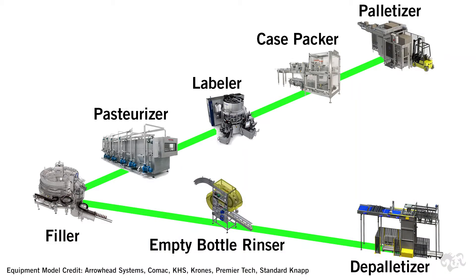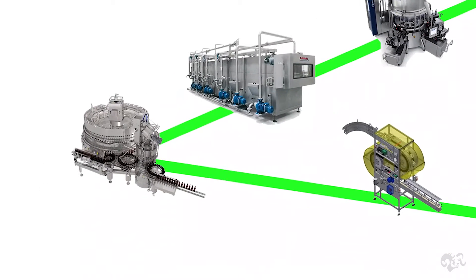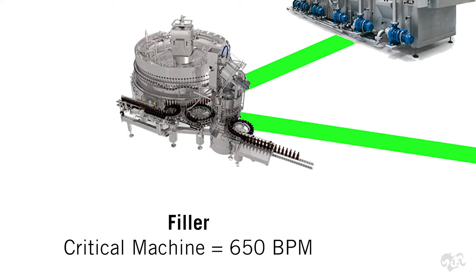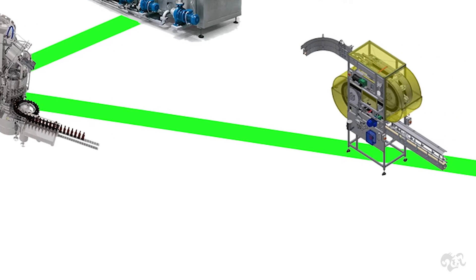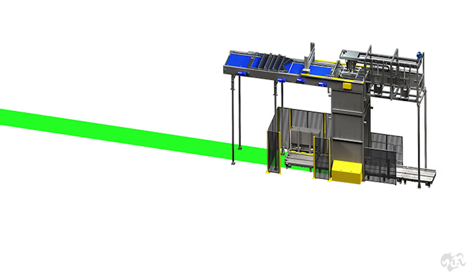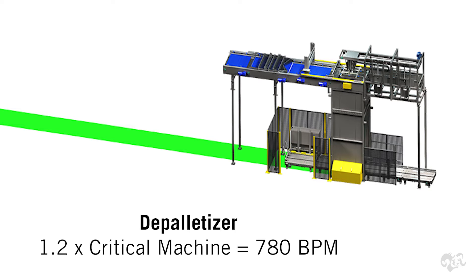In this case we've drawn the beer line. The filler will be the critical machine, set up at 650 bottles a minute. Upstream from that, we'll set the bottle rinser at 10% faster than the filler — 715 bottles a minute — and then we'll set the depalletizer 20% faster at 780 bottles a minute.